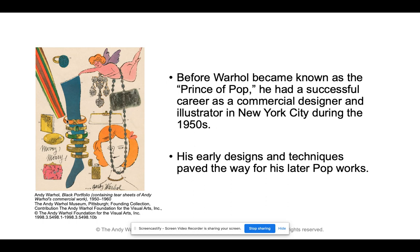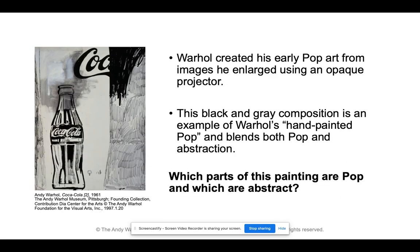Before Warhol became known as the prince of pop, he had a successful career as a commercial designer and illustrator in New York City during the 1950s. His early designs and techniques paved the way for his later pop works. Warhol created his early pop art from images he enlarged using an opaque projector — he would project an image onto a wall, put his paper down, and trace it out.